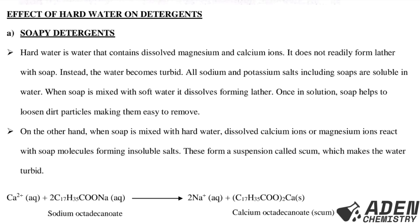Moving on to the effects of hard water on detergents. Part A — soap detergents. Hard water is water that contains dissolved magnesium and calcium ions; it does not readily form lather with soap. Instead the water becomes turbid. All sodium and potassium salts, including soaps, are soluble in water, and when soap is mixed with soft water it dissolves, forming lather and helping to loosen dirt particles.